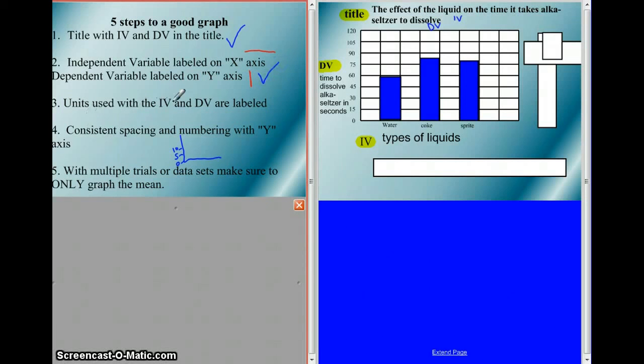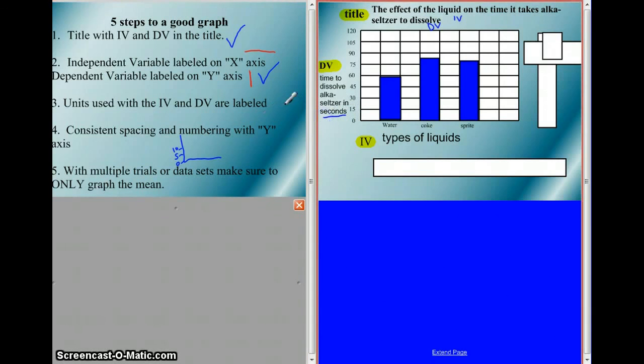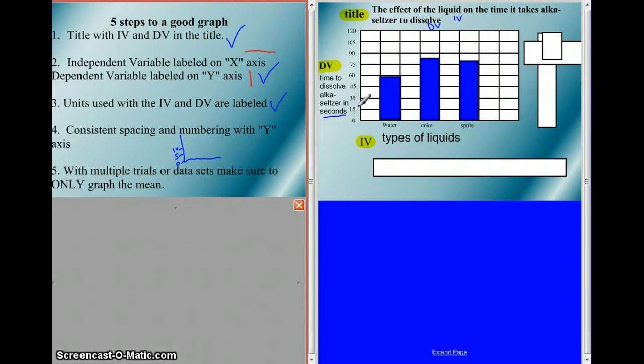Units with the independent and dependent variable are labeled. We only had one unit and that was seconds. And it is labeled. We have consistent numbering and spacing along the y-axis. We have an even amount of space in between each number. And we're going up by 15 each time. Multiple trials or data sets. Make sure to only graph the mean.